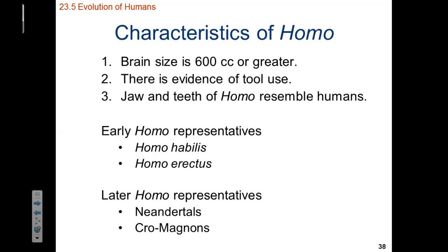Moving on, let's talk about the genus Homo within the group hominins. The Homo genus is defined by having a large brain of 0.6 liters — or 600 cubic centimeters — or larger. There is also going to be evidence of tool use, which goes hand in hand with the increased brain size. The jaw and teeth of the Homo genus resemble human beings. Early representatives include Homo habilis and Homo erectus, and then other species found later on include Homo neanderthalensis and the Cro-Magnons.